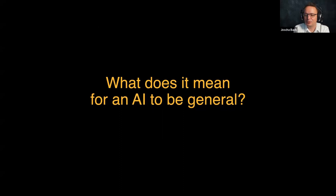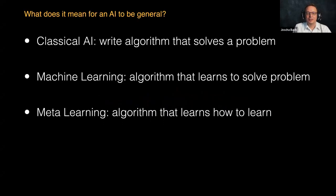To begin answering this question, we need to find out what it means for an AI to be general. Classical AI basically works by identifying a problem like chess, figuring out the solution, and writing an algorithm that implements that solution — so a lot of the intelligence exists on the side of the coder, then translated into a distilled skill. Whereas in machine learning, the skill being distilled is the ability to learn something.